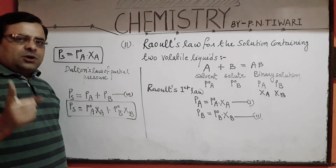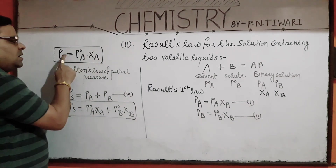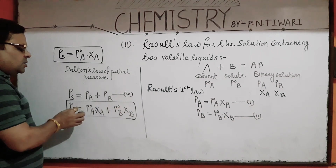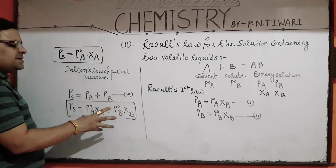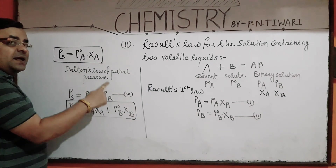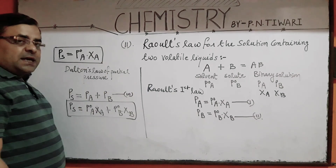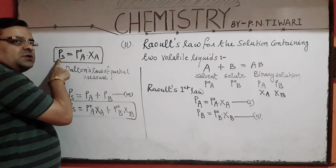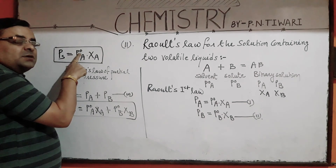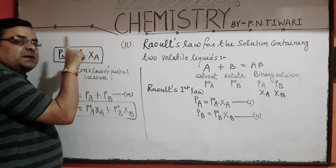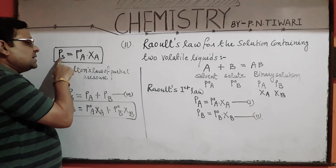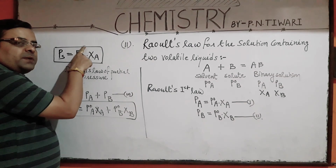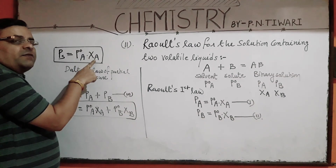Comparing Raoult's law for solutions containing non-volatile solute and for solutions containing two volatile liquids: in the case of two volatile liquids, the total vapour pressure depends on the partial vapour pressure of both solvent and solute. But if the solute is non-volatile, the total vapour pressure does not depend on the partial vapour pressure of solute — it only depends on the partial vapour pressure of solvent, so Ps = P0·XA.